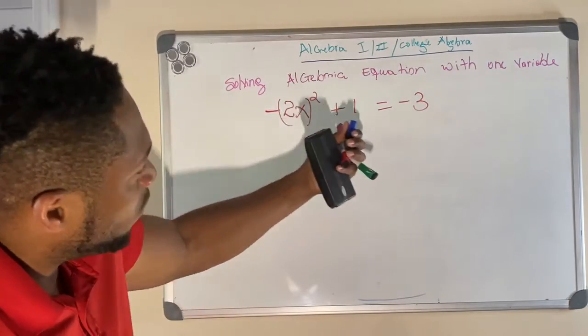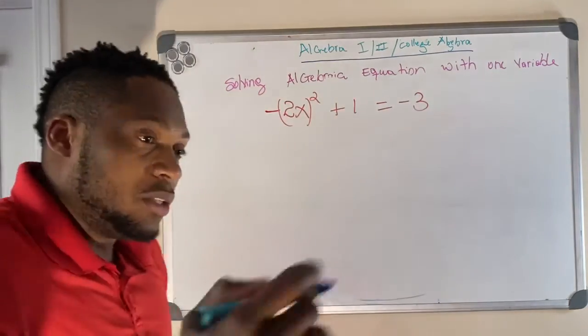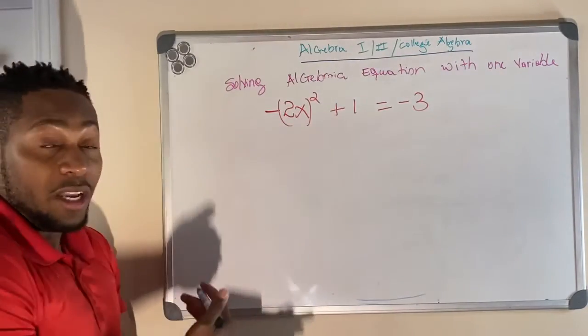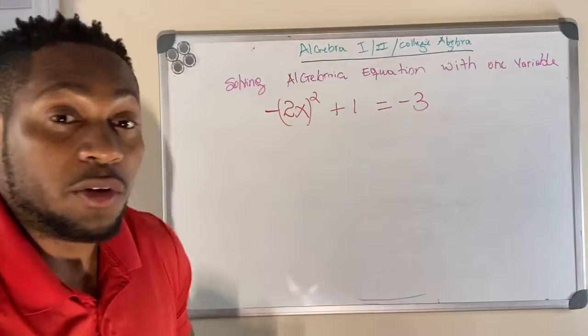So -2x² + 1 = -3. The way we want to do this is leave the variable on one side of the equality and everything else on the other side of the equality.